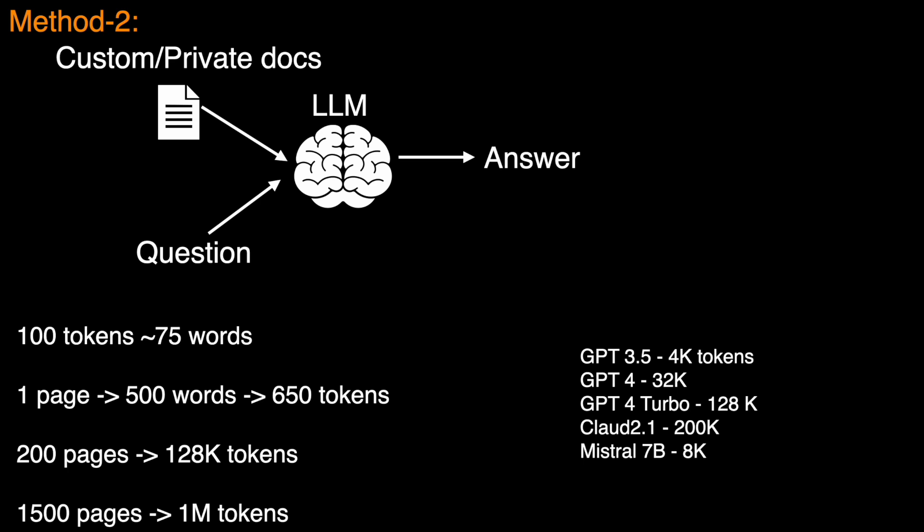But we have a context length limitation here. For example, the earlier version of LLMs, they can accept only up to a few thousand tokens. A token is roughly about 0.7 words or we can say 100 tokens is roughly 75 words.